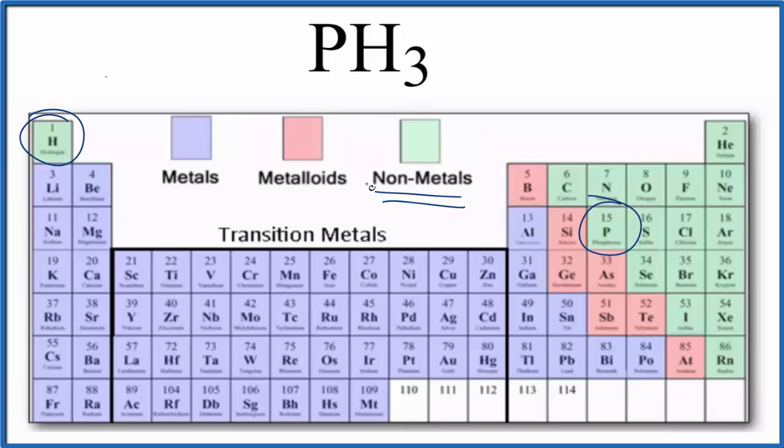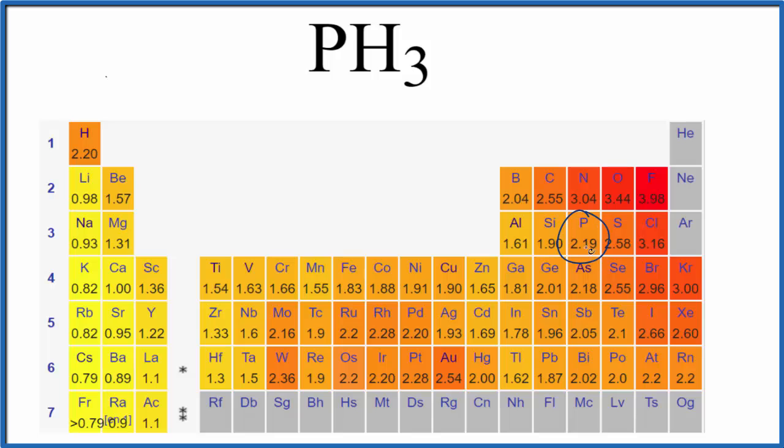Let's look at the difference in electronegativity between phosphorus and hydrogen to see if that's the case. So here, there's phosphorus 2.19 and hydrogen 2.20. So the difference in electronegativity, 2.20 minus 2.19, that's 0.01. So barely any difference in electronegativity between phosphorus and hydrogen.